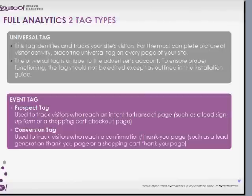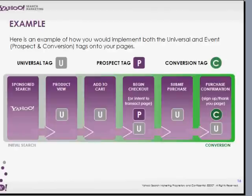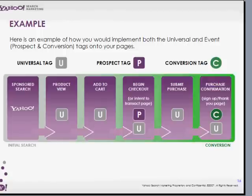The universal tag is used to identify and track your visitors' activities. At a minimum, it needs to be placed on the landing page. The prospect tag is used to track a visitor's intent to perform a transaction, and the conversion tag is a call to action, which is normally placed on the confirmation or thank-you page. The next slide shows an example of the flow of how the tags are laid out. Starting at the Yahoo site, the universal tag is placed on the landing page at a minimum. The add-to-cart page has the universal tag. The begin-checkout/intent-to-transact page has the prospect tag immediately followed by the universal tag. The submit-purchase page has the universal tag. And the purchase confirmation page has the conversion tag immediately followed by the universal tag.